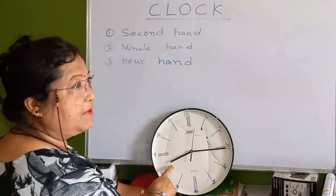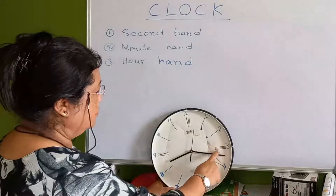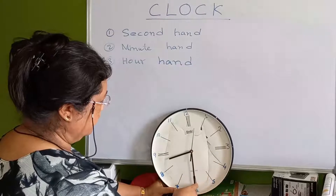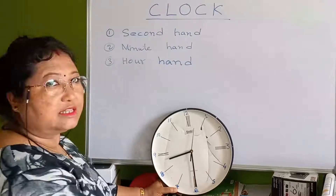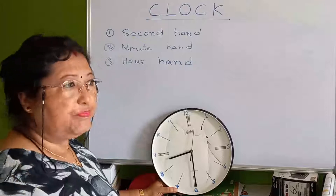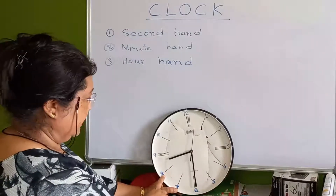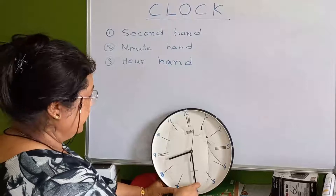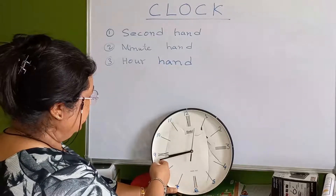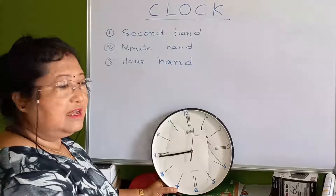When the minute hand reaches 3, 15 minutes are done, so the time is 8:15. When it reaches 6, that is 8:30 — half an hour is over. That is how you write 8:30.